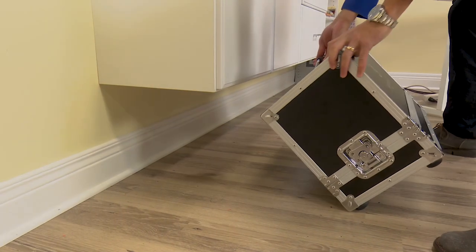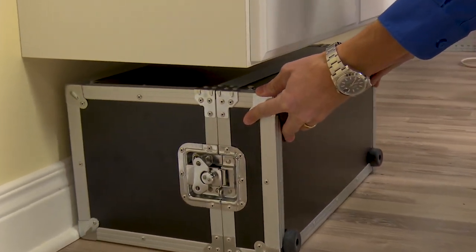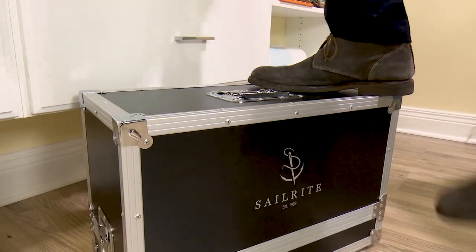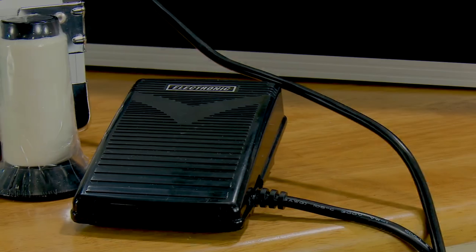If space is limited, no problem. The top of the case is fitted with enough foam to support the metal Ultrafeed sewing machine, even if it's stored on its side. In fact the case is so tough that you can easily stand on it without damage.